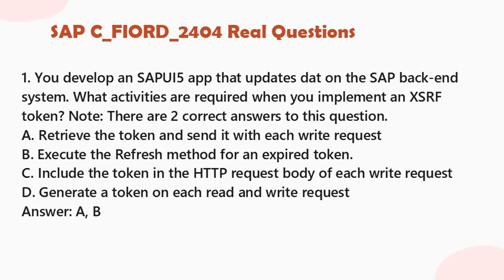Question 1: You develop an SAPUI5 app that updates data on the SAP backend system. What activities are required when you implement an XSRF token? Note, there are two correct answers. A. Retrieve the token and send it with each write request. B. Execute the refresh method for an expired token. C. Include the token in the HTTP request body of each write request. D. Generate a token on each read and write request. Answer: A, B.